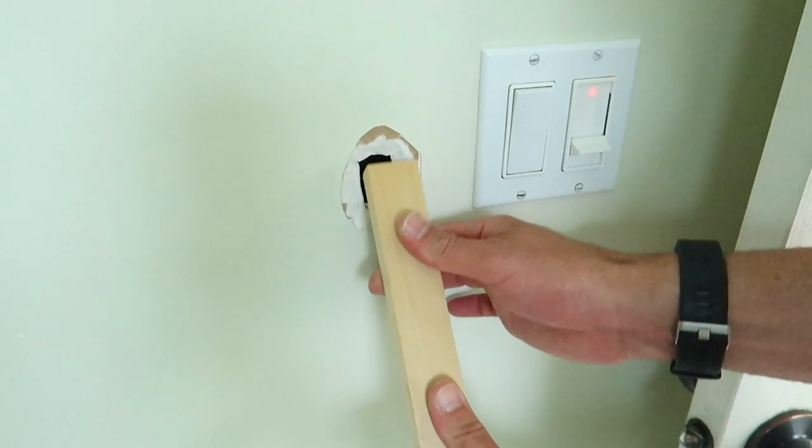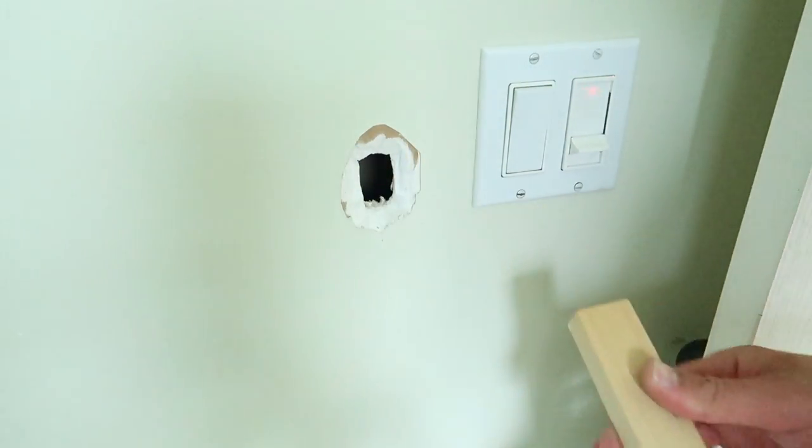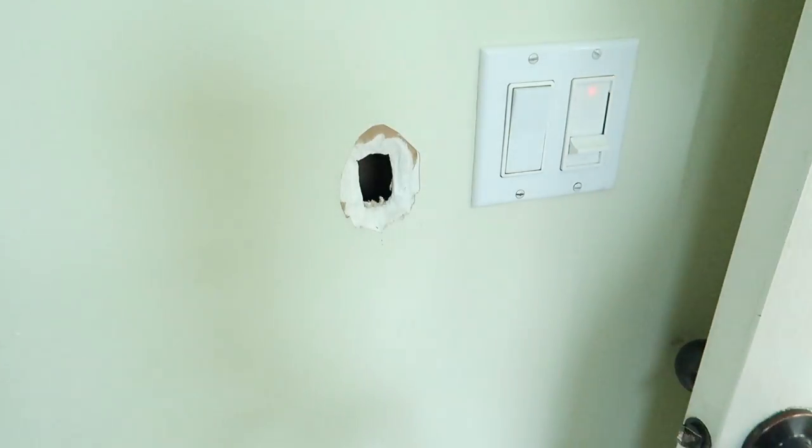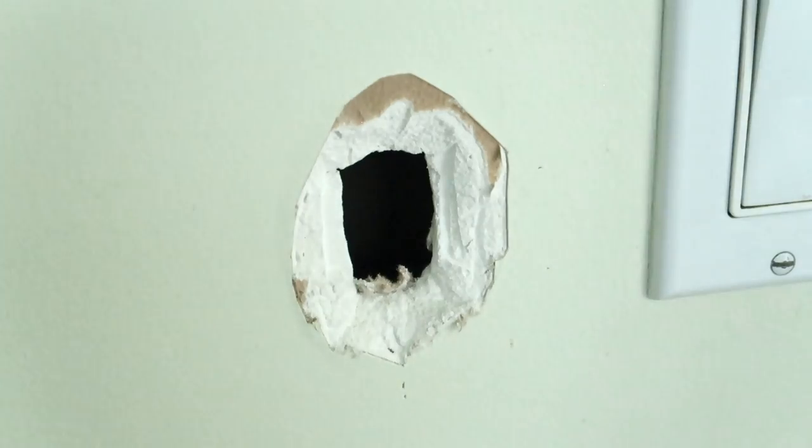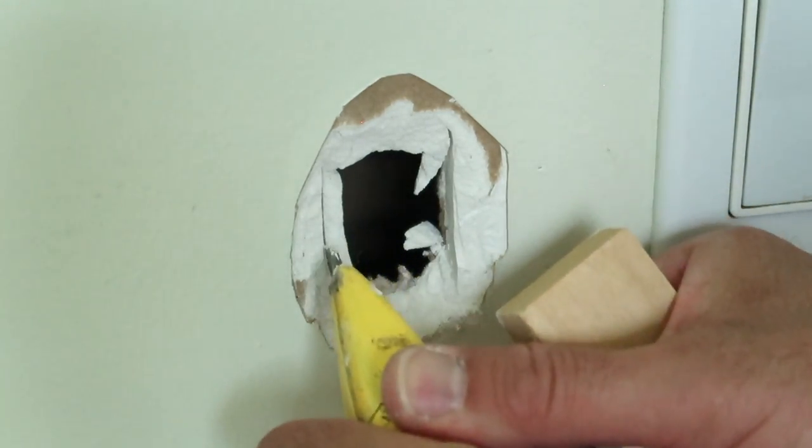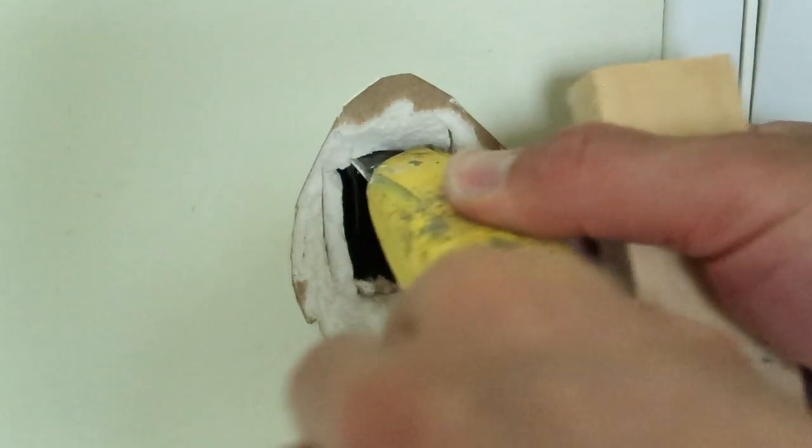Rather than just patch this with more joint compound and put in those anchors again, I'm going to give something for those screws to bite into and hold. I grabbed a scrap piece of wood that's about an inch and a half wide and three quarters of an inch thick, and I'm going to widen the hole so that this wood can go inside the wall.